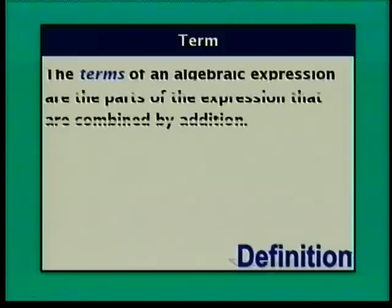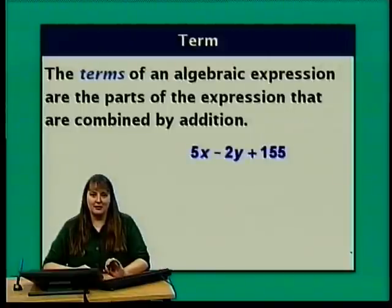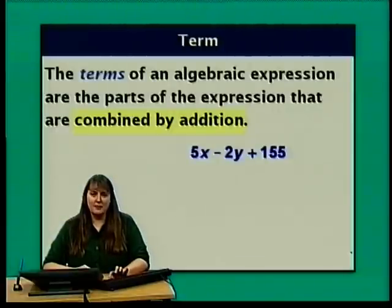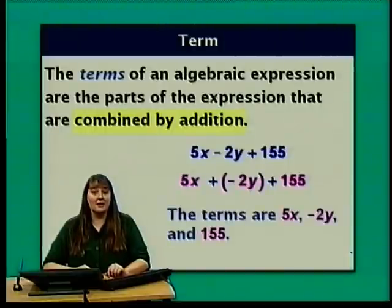Let's start by reviewing a couple of definitions. The terms of an algebraic expression are the parts of the expression that are combined by addition. In the expression 5x minus 2y plus 155, I can rewrite this as 5x plus negative 2y plus 155. This makes it easy to see that the terms are 5x, negative 2y, and 155.